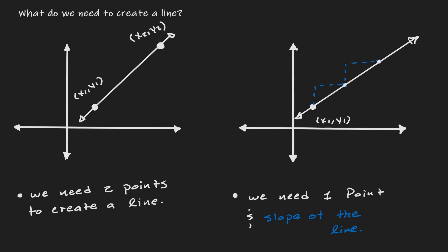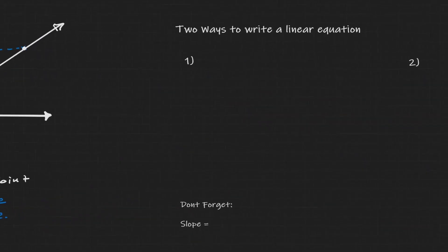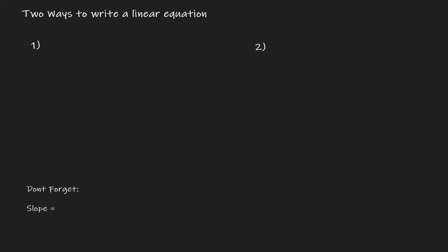Now that we have a visual interpretation of what is needed to create a line, let's discuss the possible equations we can define for a line. There are two ways to write a linear equation. The first form is the slope-intercept form, defined as y equals mx plus b. To use this form, there are only two values we need to know: m and b, where m represents the slope of the line and b represents the y-intercept.